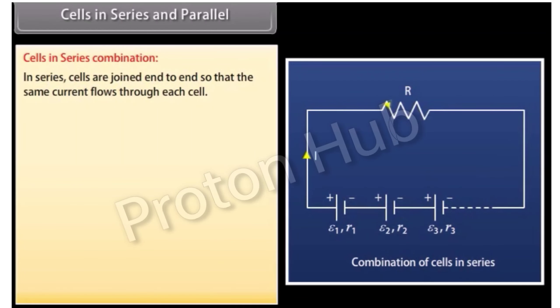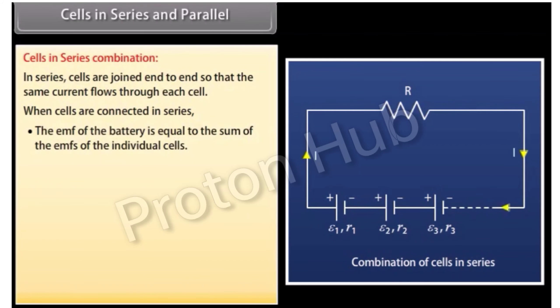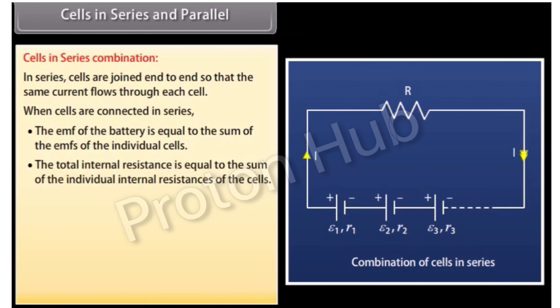In series combination, cells are joined end to end so that the same current flows through each cell. The positive terminal of one cell is connected to the negative terminal of the next. The EMF of the battery equals the sum of the EMFs of the individual cells, and the total internal resistance equals the sum of the individual internal resistances.